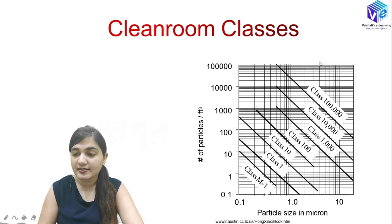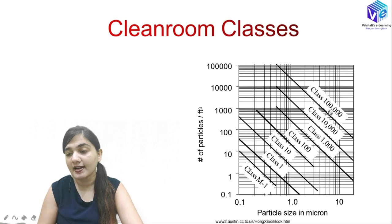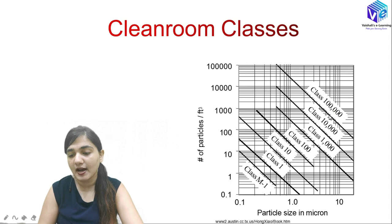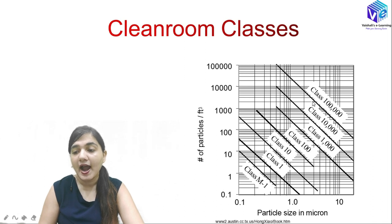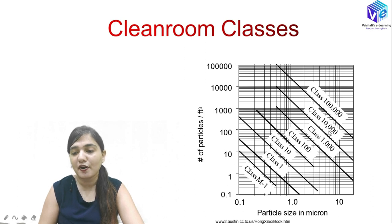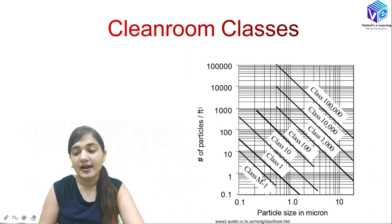These are the various classes. Class 1 lakh has the most particles and the largest particle size. Then Class 10,000 — the number and size of particles decrease. Then Class 1000, Class 100, Class 10, Class 1, and then Class M1. The particle count and particle size in microns both decrease as we move down through the classes.